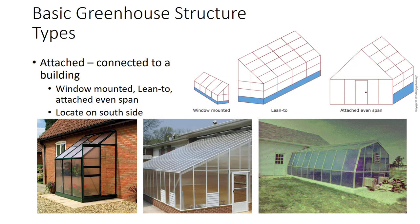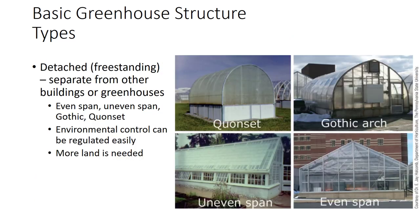Attached greenhouses should be located on the south side of the building to take advantage of sunlight. Detached greenhouses, or freestanding greenhouses, are separate from other buildings or greenhouses.